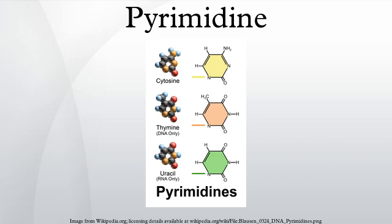Pyrimidine is an aromatic heterocyclic organic compound similar to pyridine. One of the three diazines, it has nitrogens at positions 1 and 3 in the ring. The other diazines are pyrazine and pyridazine.